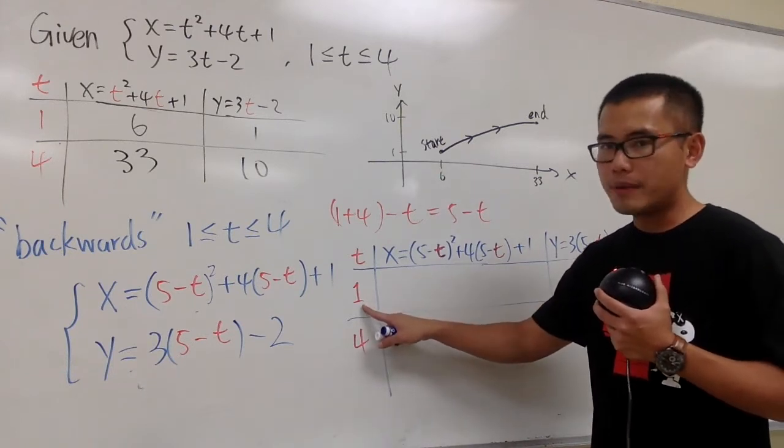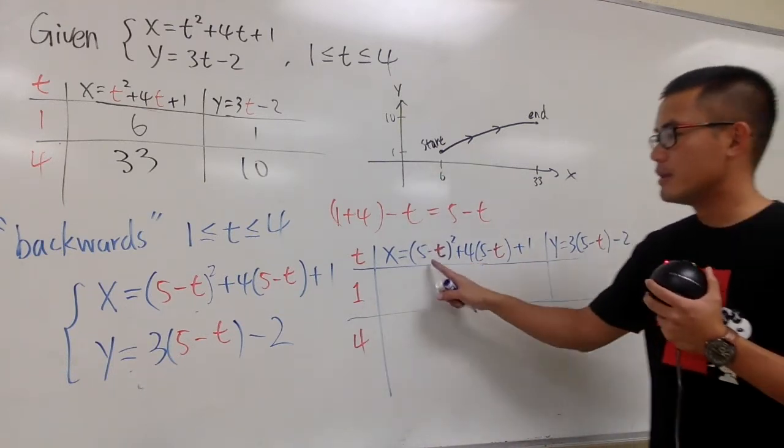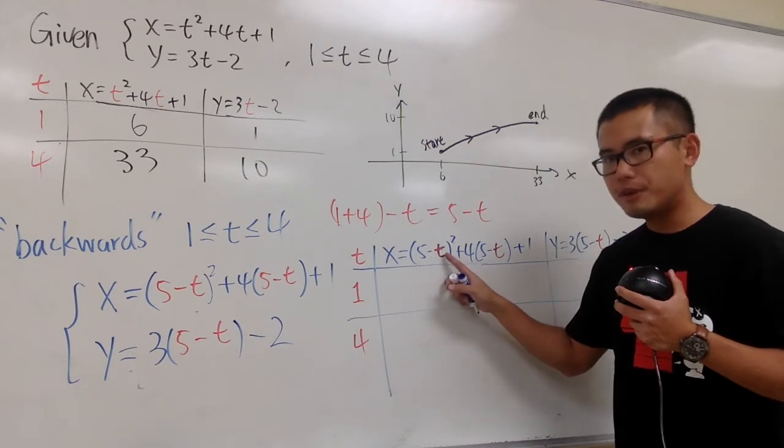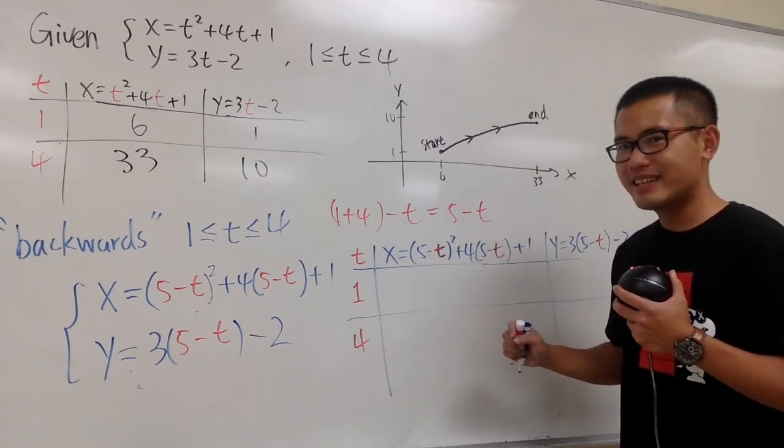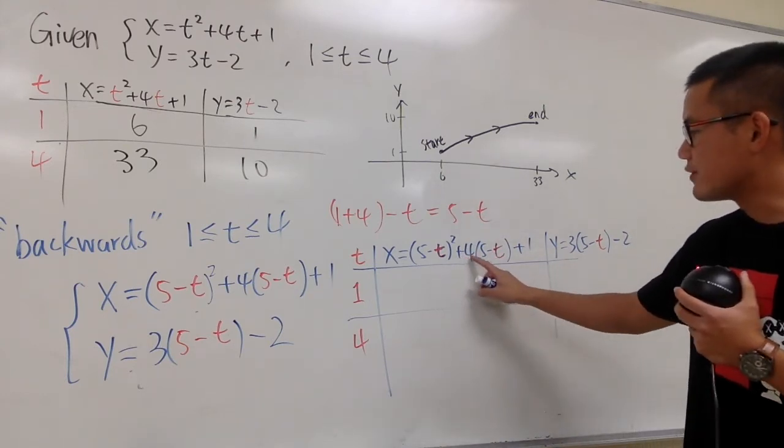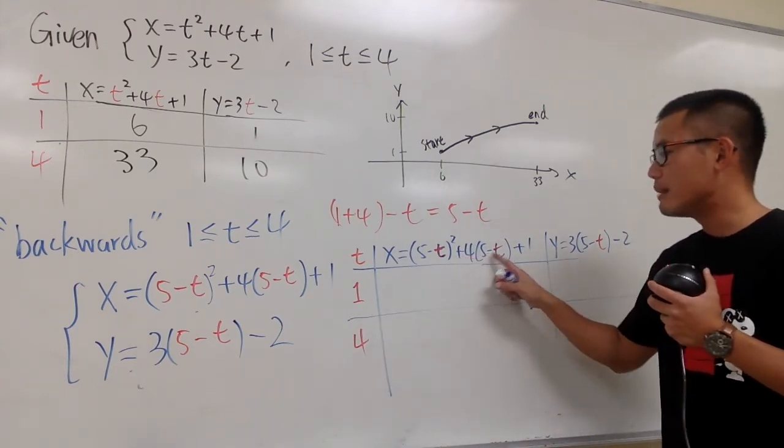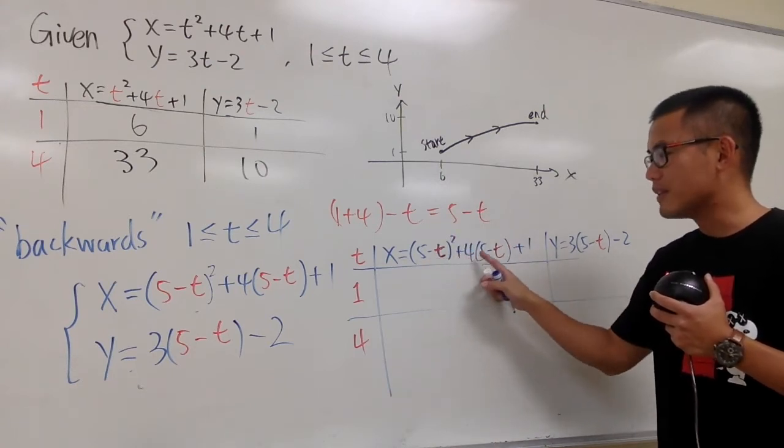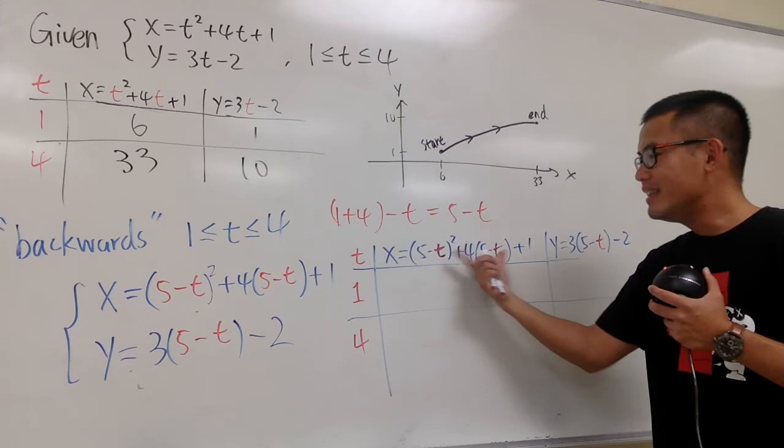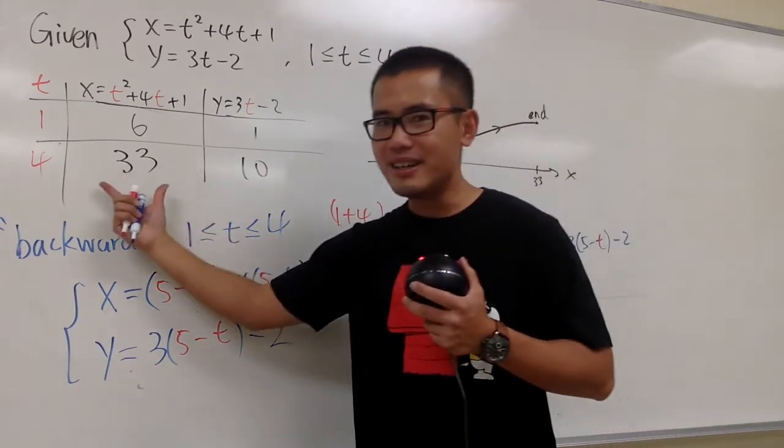When you plug in 1 into this t now, you do what? 5 minus 1 first, which is 4. And then you end up with 4 squared, isn't it? And then right here you have to do plus 4, and then plugging 1 in here, 5 minus 4 is 4. So you see, here you have the 4 squared plus 4 times 4 plus 1. This, it's the same as earlier, isn't it?